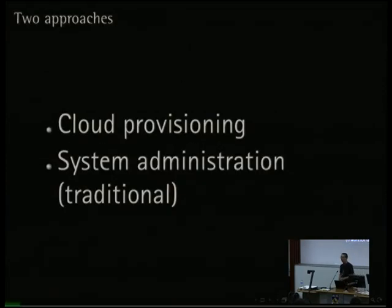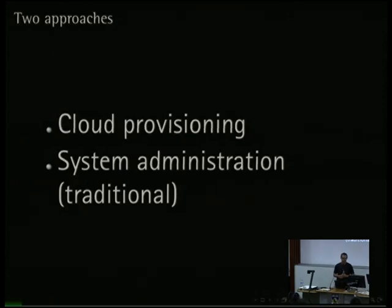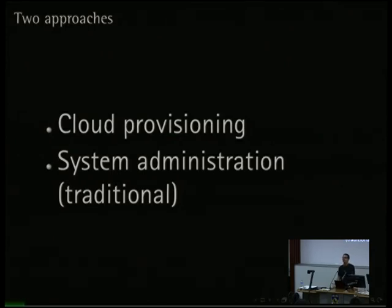There are two approaches to system automation and management. One is cloud provisioning — everyone seems to be doing it but nobody seems to know exactly what it is. The other is system administration, which is a more traditional approach. The main difference is that with system administration you actually still give loving hostnames to your machines, whereas everything else is WWW001 and so on.